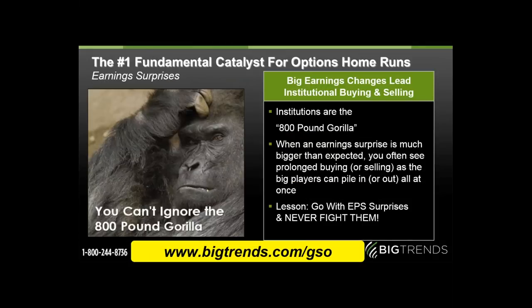We're going to walk you through how to break that fear down — trade small and build up. You also can't ignore what I call the 800-pound gorilla: the institutions. The institutions are the number one factor you've got to be in tune with. When we're trading, we're not going to fight what the market is doing in the form of big institutions piling in or out. Fundamentals still matter, and the number one fundamental I look at is earnings surprises.